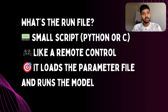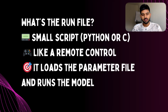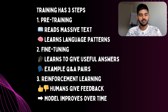Once the training is done, all the knowledge gets compressed into a single file of around 140 GB — it's like stuffing a giant library into a super GPU file. Then there's the second file: the run file. This one is small, just a few hundred lines of code usually written in Python or C. It's the file that runs our model — think of it like a remote control that turns the brain on and lets it answer questions.